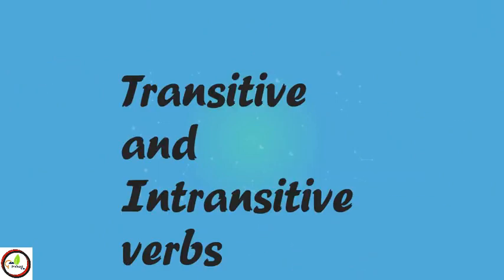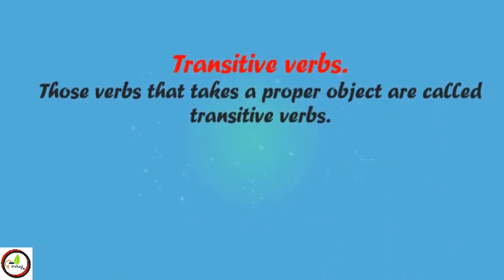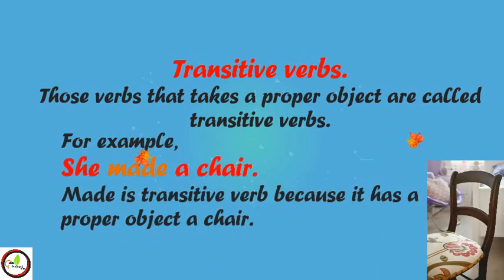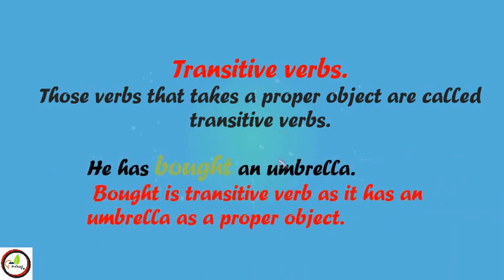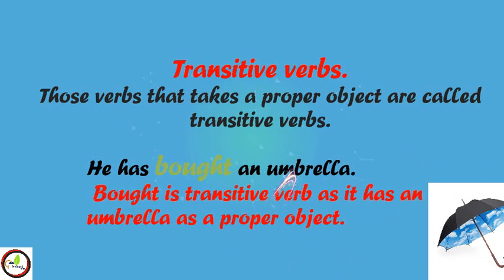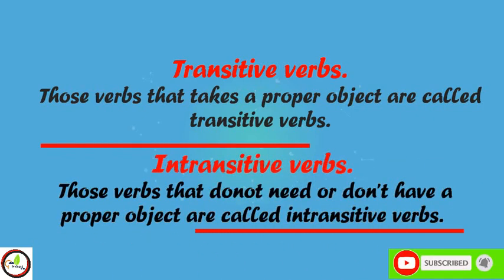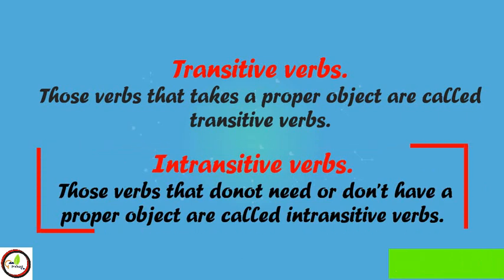Type 4: Transitive and Intransitive verbs. Those verbs that take a proper object are called transitive verbs. For example, in the sentence 'She made a chair,' made is a transitive verb because it has a proper object: a chair. Similarly, in the sentence 'He has bought an umbrella,' bought is a transitive verb as it has an umbrella as its proper object.